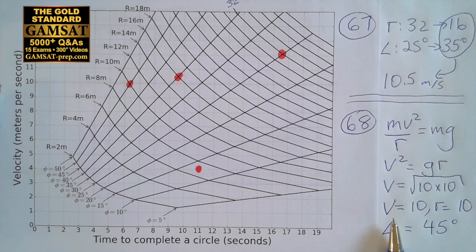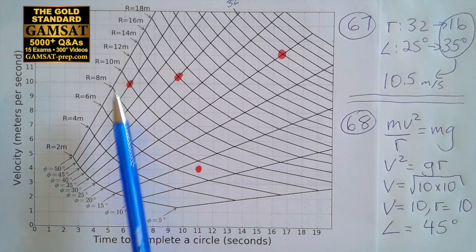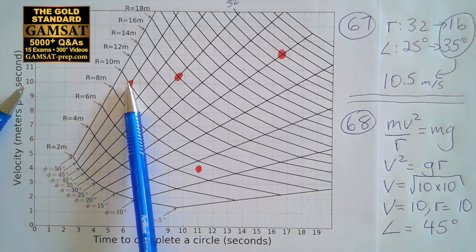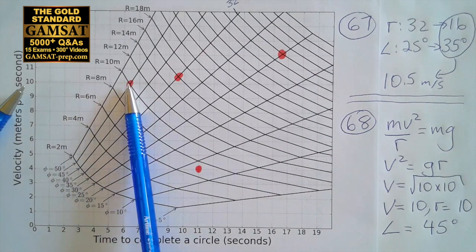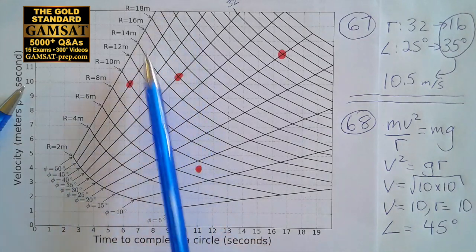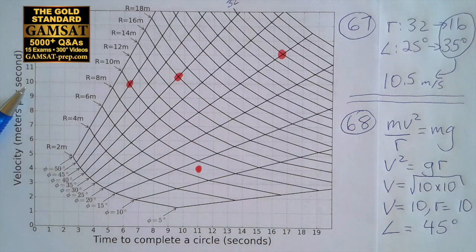Now we have a velocity of 10 and a radius of 10, and we just have to look at the graph to see the angle. Here's the radius - we get to 10. Here's the velocity which is at 10, and so we have this intersection right here. Then we just have to look at the angle, and the angle of course is 45 degrees. So for question 68 the answer is D.